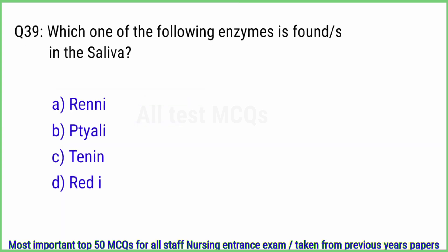Q39. Which one of the following enzymes is found secreted in the saliva? The right answer is option B, ptyalin.